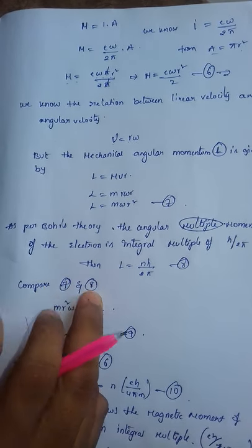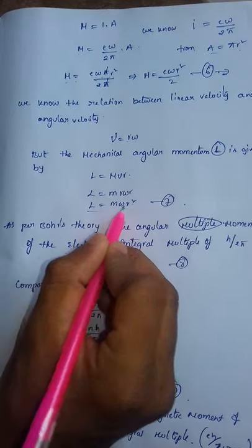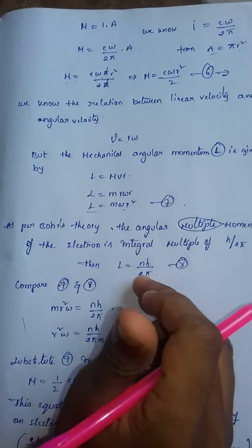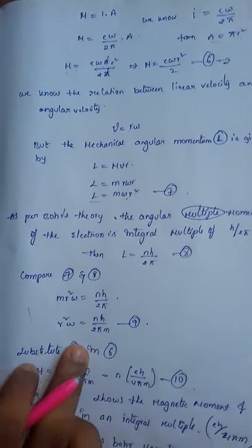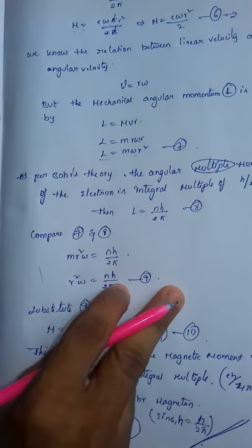Comparing the seventh and eighth equations, we have L equals to M omega r squared and L equals to n h by 2π. Comparing these two equations, we get M omega r squared equals to n h by 2π.